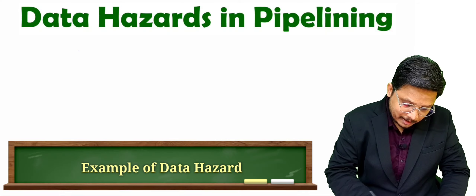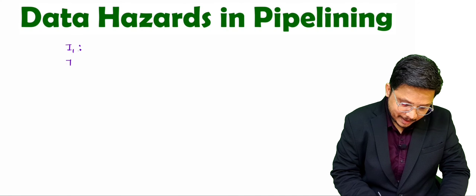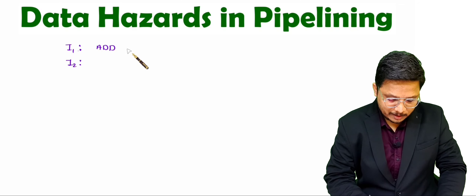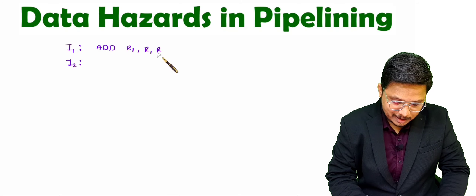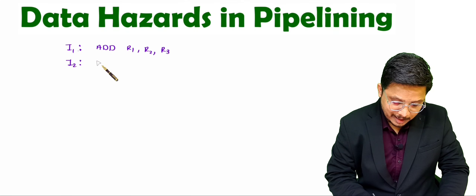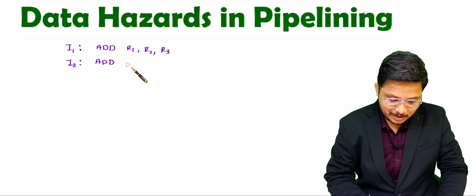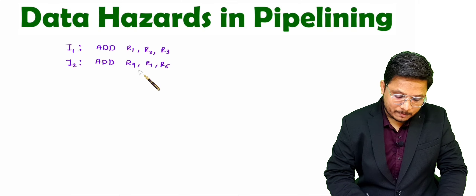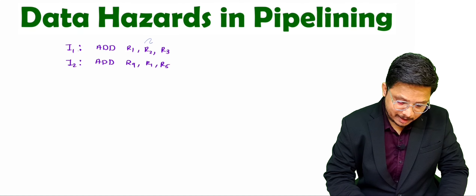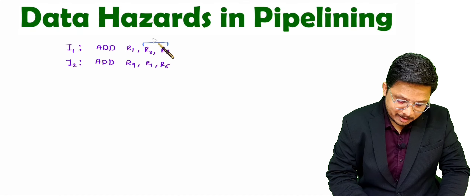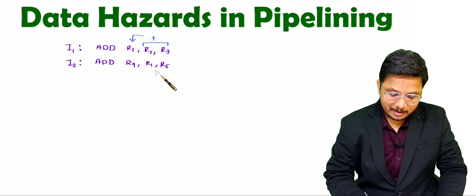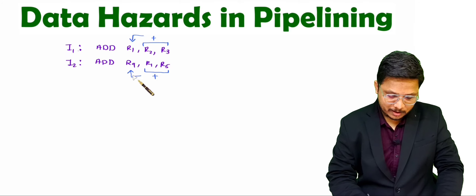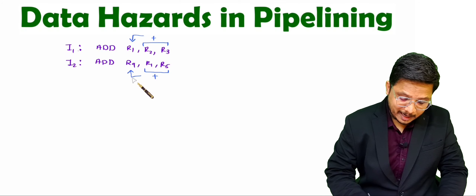Consider instruction I1 and instruction I2. In I1 we are performing an addition: ADD R1, R2, R3 — we add R2 and R3 and store the result in R1. In I2 we have another addition: ADD R4, R1, R5 — we add R1 and R5 and store the result in R4. Now observe that I2 depends on R1, which is the output of I1.